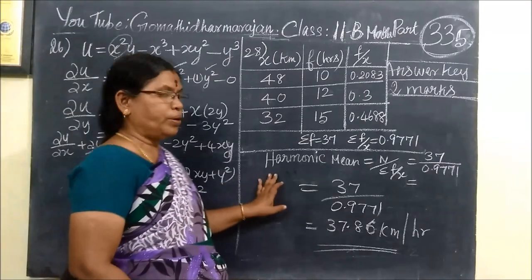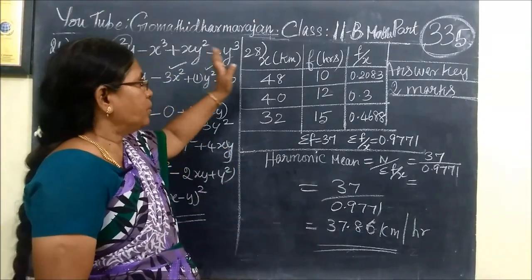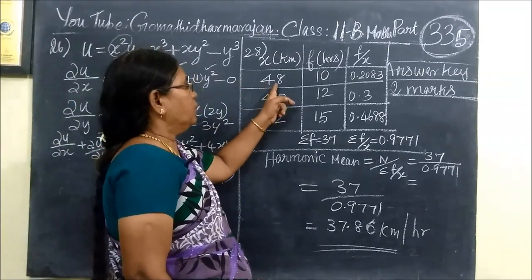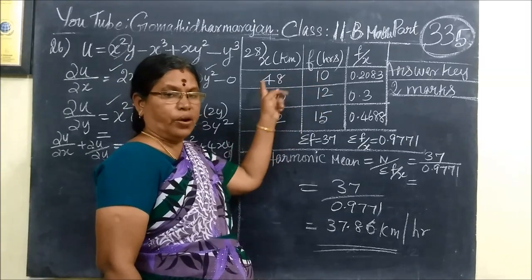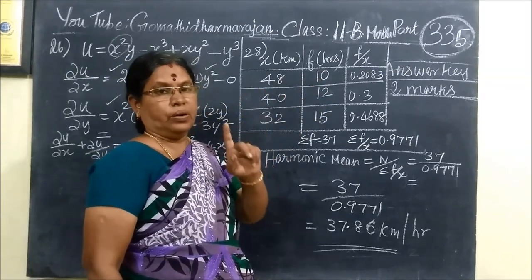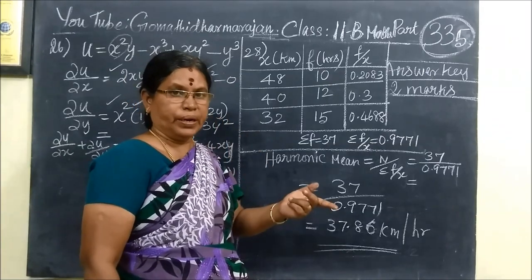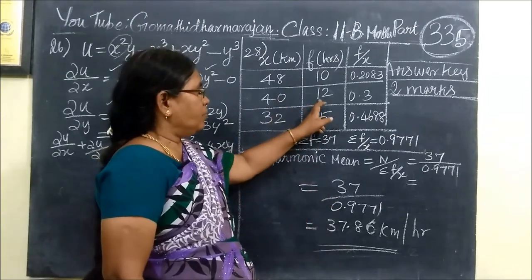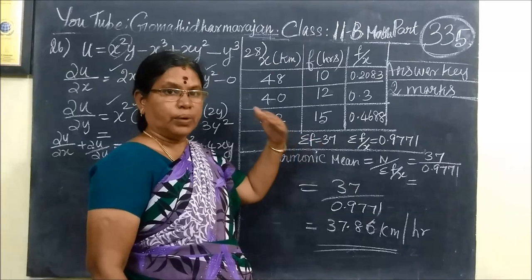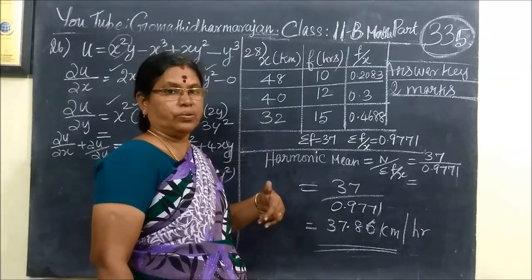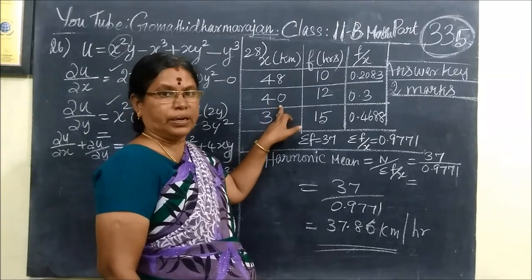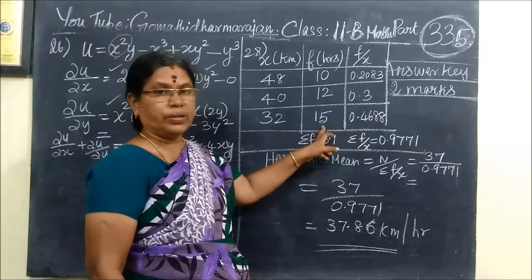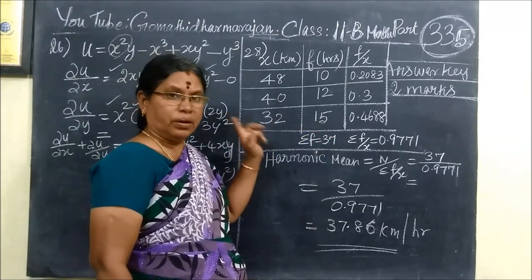Using the harmonic mean — a person has to cross a total of 480 km. On the first day, he travels for 10 hours at 48 km per hour. On the second day, 12 hours traveling at 40 km per hour. And on the third day, 15 hours traveling at 32 km per hour.